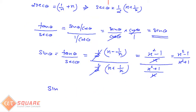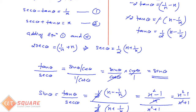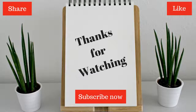So the value of sin θ = (x² - 1) / (x² + 1). The question is now complete. In the next video, I will meet you with another trigonometry question.